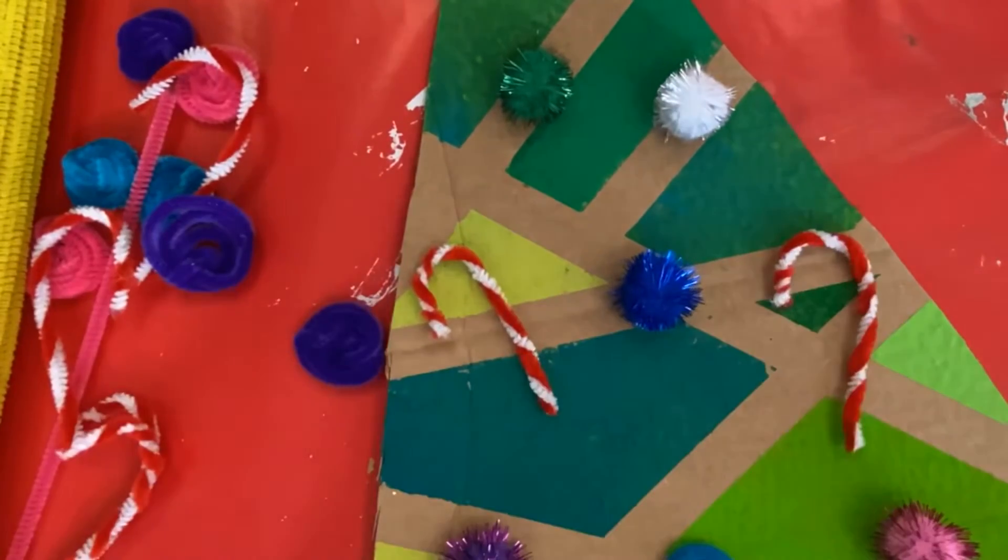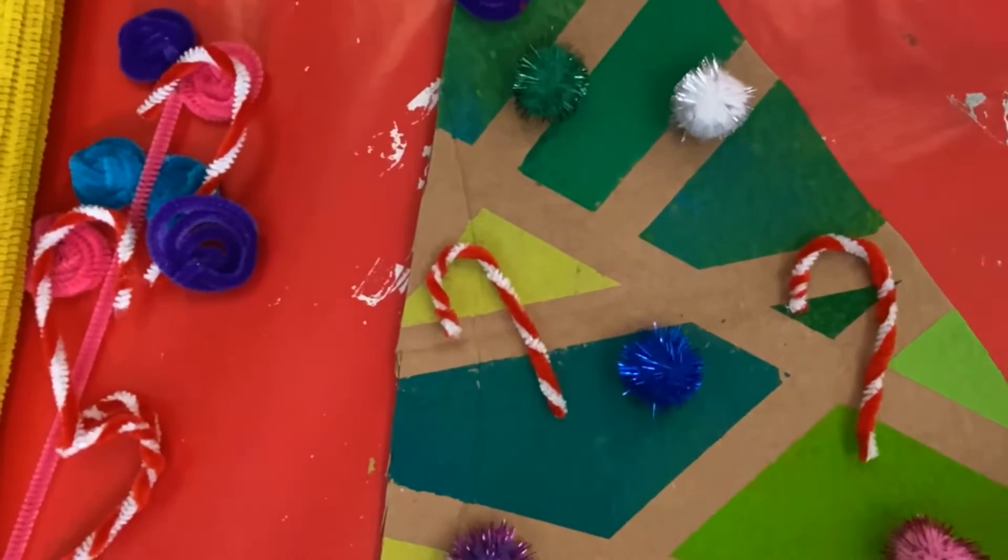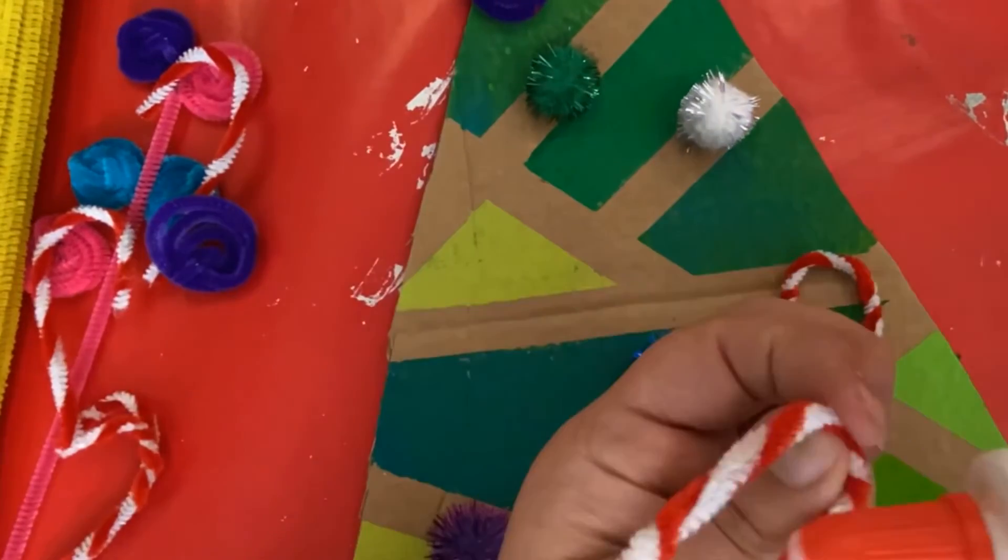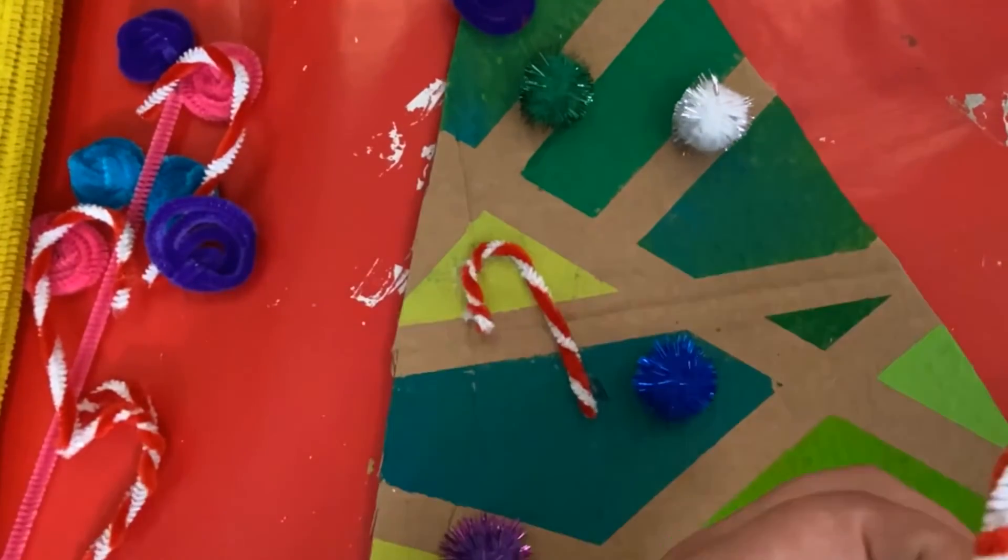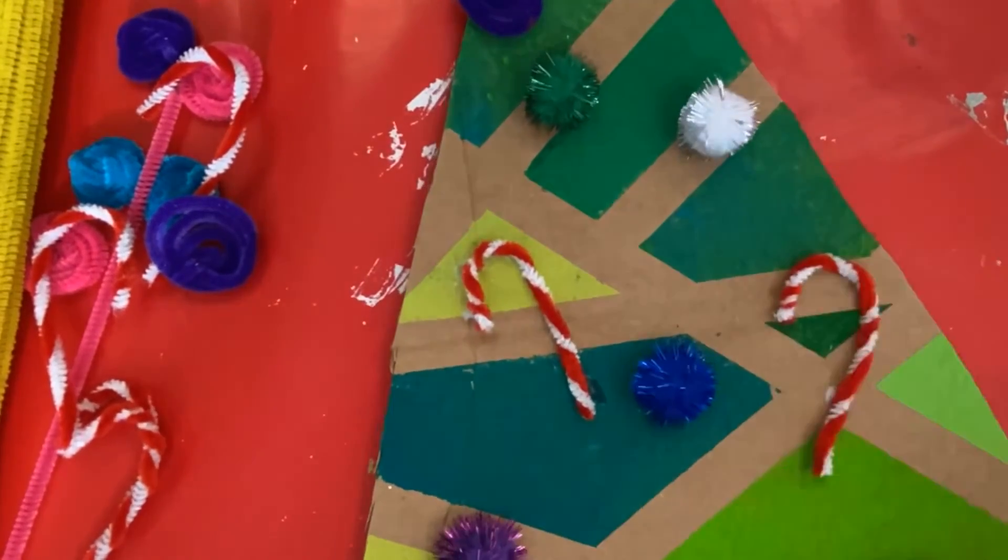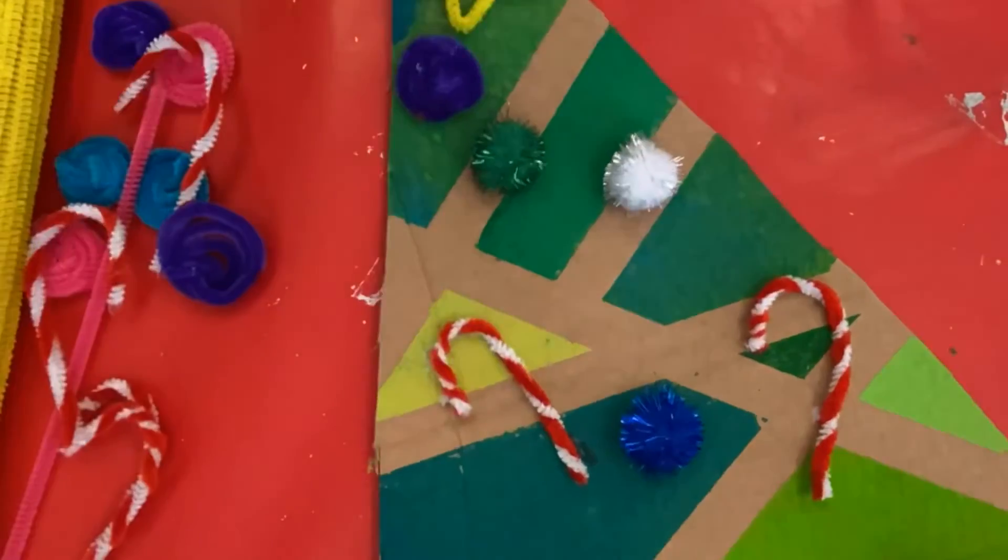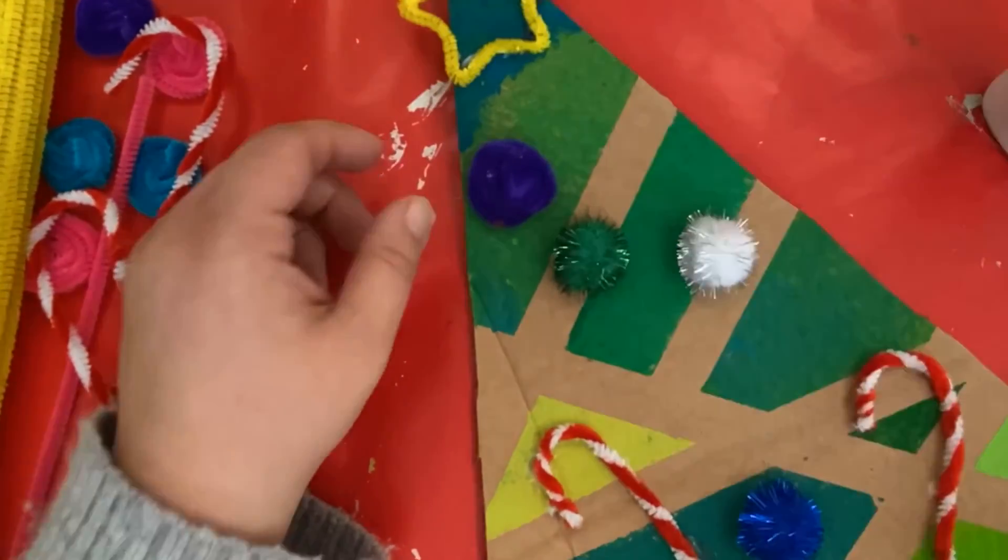Now to decorate your tree, what you're going to do is lay out your decorations on your tree and just play with it. Change it up a little bit and once you're happy with it, go ahead and glue it down. You'll want to leave your tree to dry flat until it is completely dry, and then you can hang it around your house or put it in a playroom for cute festive decor. Have a great weekend!